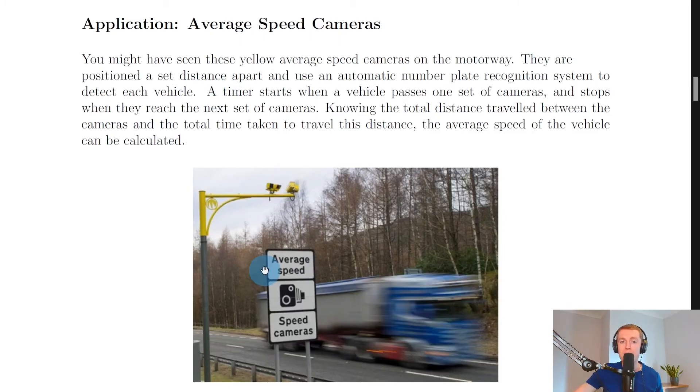They come in pairs. They're painted yellow at the top so that they're clearer to see, and they often have road signs below them like this, showing that it's an average speed camera. And the way they work is that they are positioned a set distance apart, so we know what the distance is between any two average speed cameras.